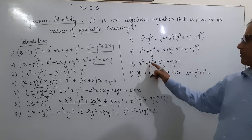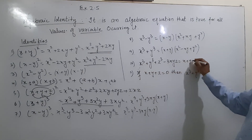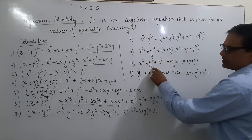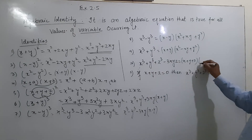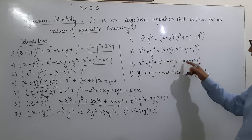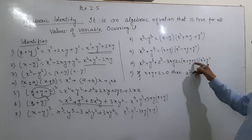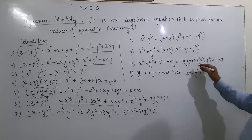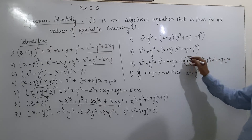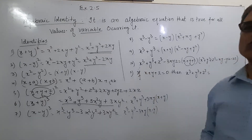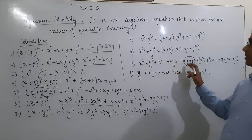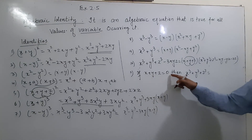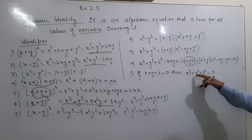For the identity x³ + y³ + z³ − 3xyz, we assume x, y, and z are positive; if there is a negative sign, then that variable is negative. The formula is: x³ + y³ + z³ − 3xyz = (x+y+z)(x² + y² + z² − xy − yz − zx). If x + y + z = 0, then x³ + y³ + z³ = 3xyz.